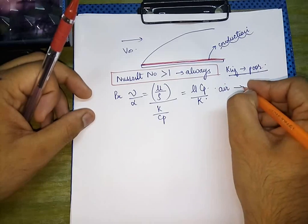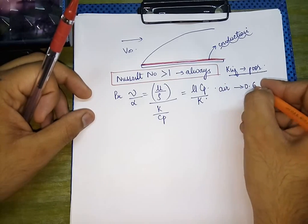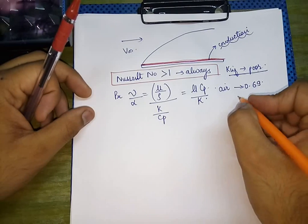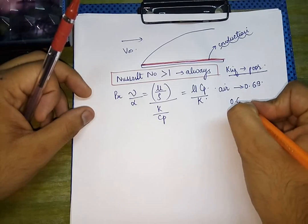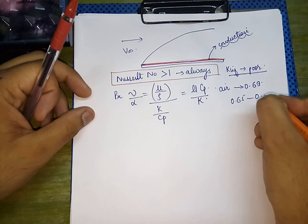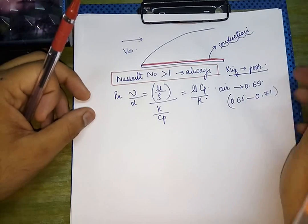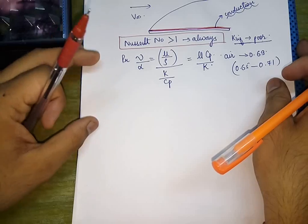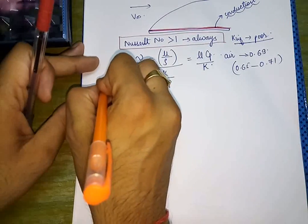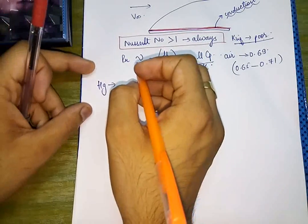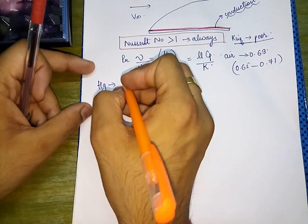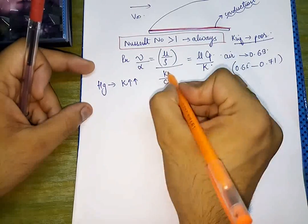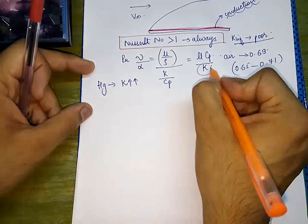For air, the value of Prandtl number is approximately 0.69, generally in the range of 0.65 to 0.71. Liquid metals like mercury have very low values of Prandtl number since their thermal conductivity K is very high — because mercury's thermal conductivity is very high.